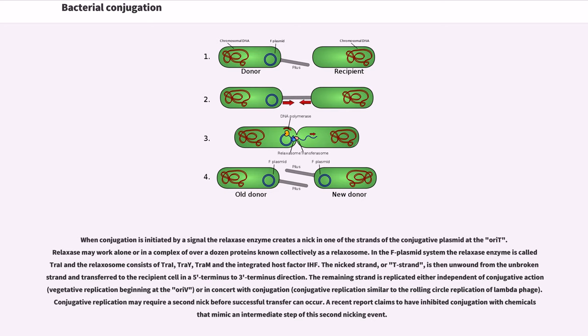Conjugative replication may require a second nick before successful transfer can occur. A recent report claims to have inhibited conjugation with chemicals that mimic an intermediate step of this second nicking event.